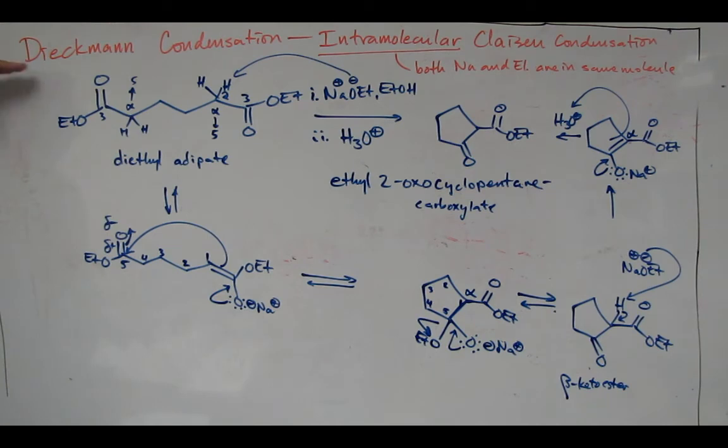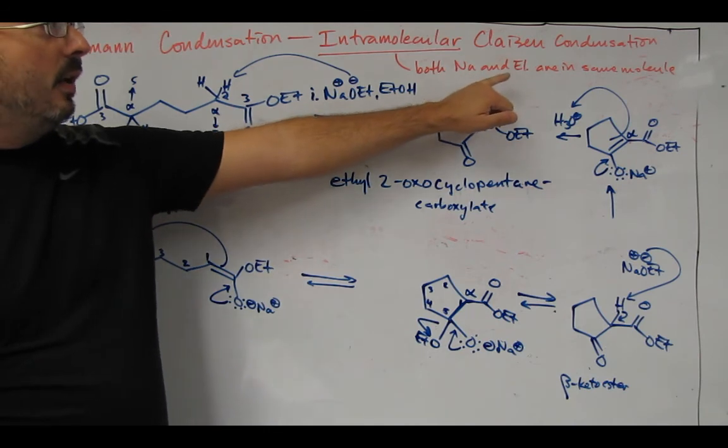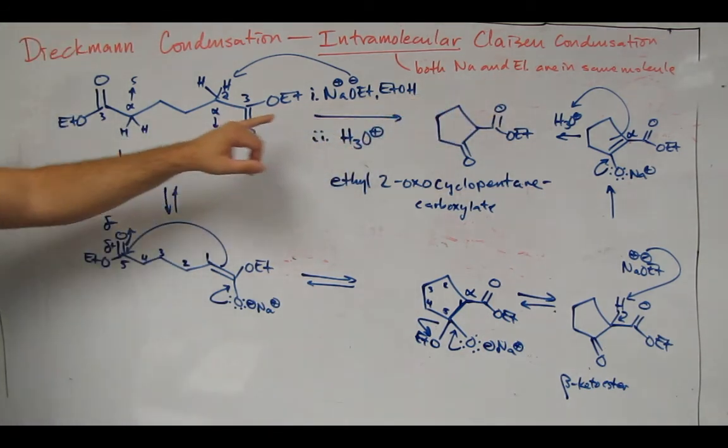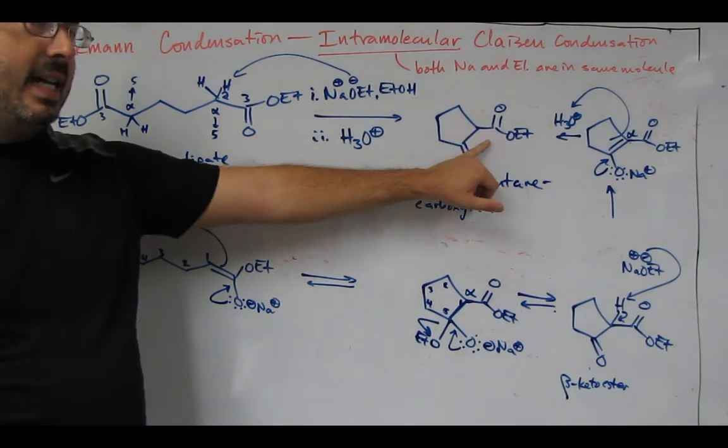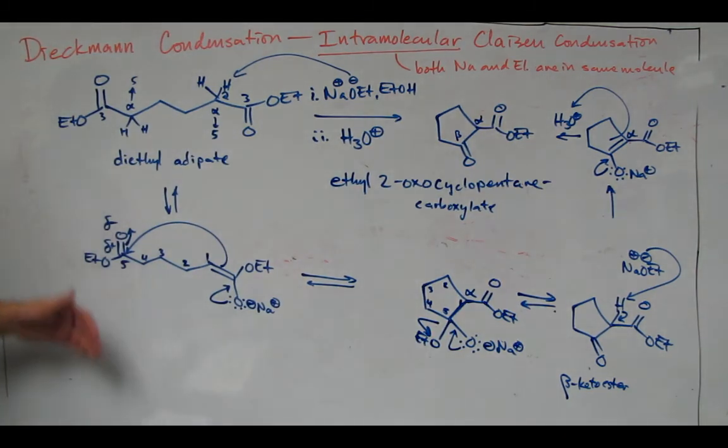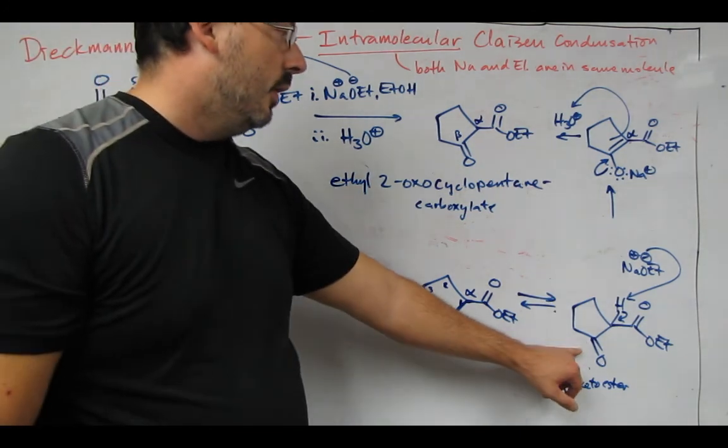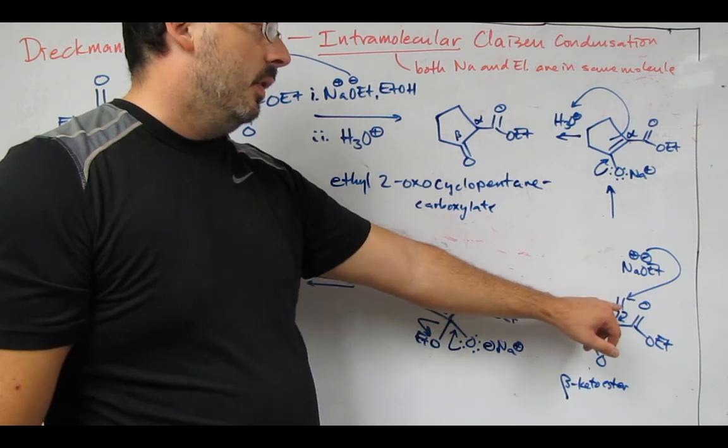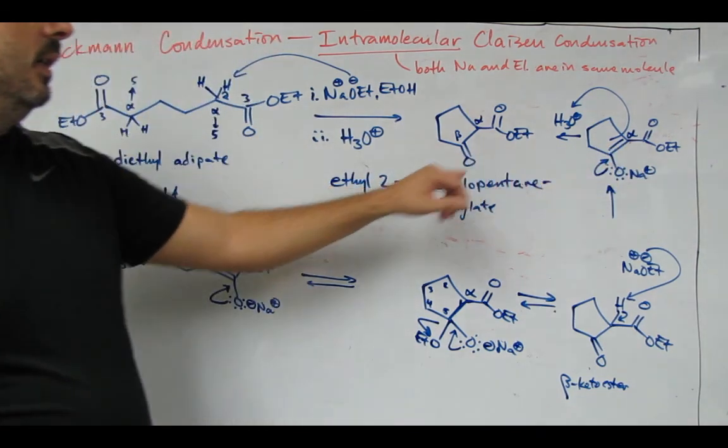So just to review it, Dieckmann condensation is an intramolecular Claisen, meaning both the nucleophile and the electrophile in the same molecule. In the big picture, you have a diester that undergoes Claisen, and you're producing a beta-keto ester. So alpha, beta, that's a beta-keto ester. Deprotonation of an alpha carbon generates the enolate. The enolate attacks the other ester carbonyl. You form your sp3 carbon here that then undergoes elimination of the carbonyl. The driving force is deprotonation of that acidic proton to get you your stabilized enolate, which is protonated to give you your final product.